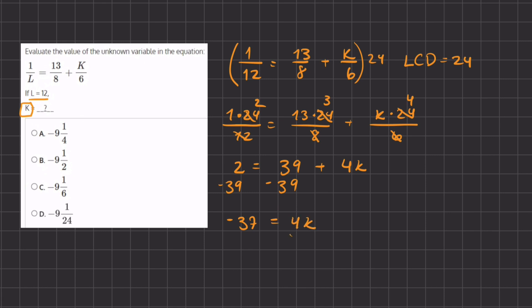In order to find the value of k, we are going to isolate it by dividing 4 on both sides. And now we have k equals negative 37 divided by 4.